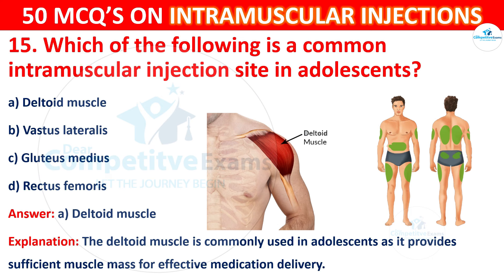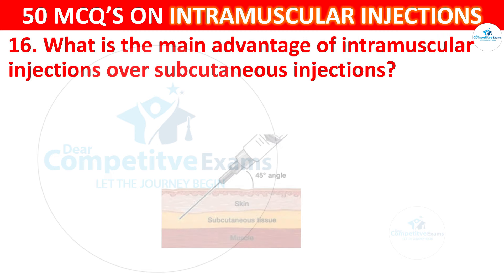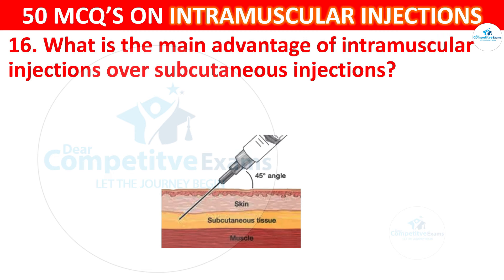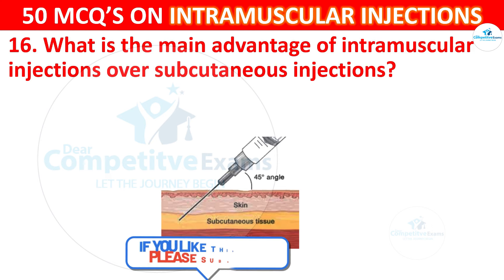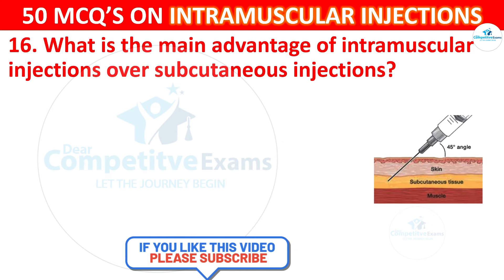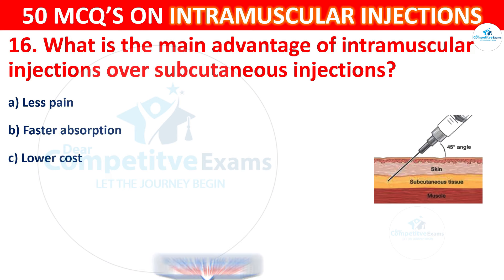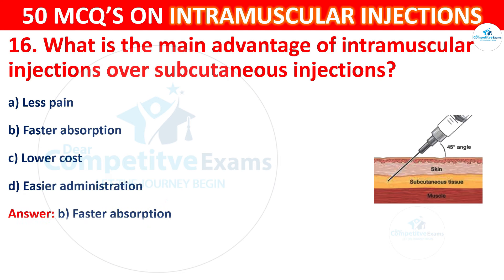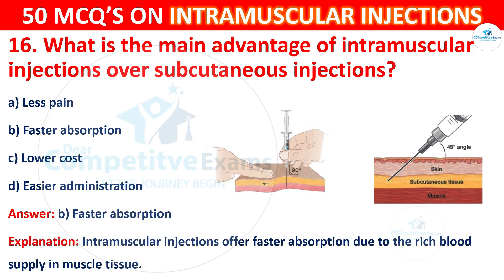Question 16: What is the main advantage of intramuscular injection over subcutaneous injections? Options are: less pain, faster absorption, lower cost, or easier administration. The correct answer is B, faster absorption. Intramuscular injection offers faster absorption due to the rich blood supply in the muscle tissues.